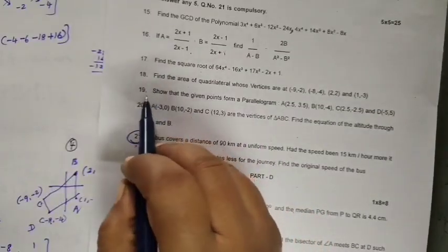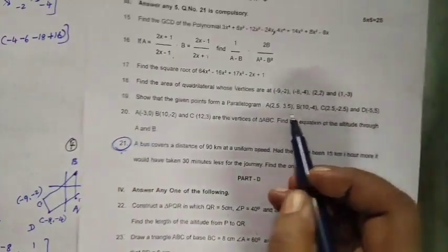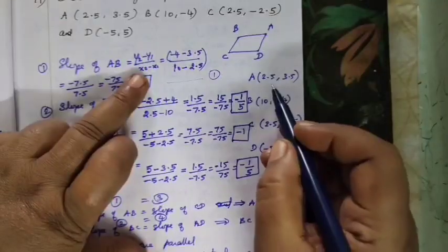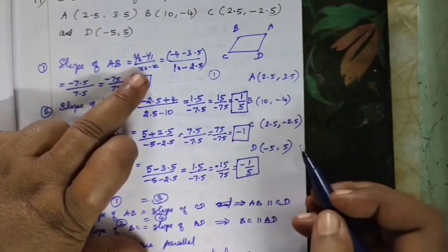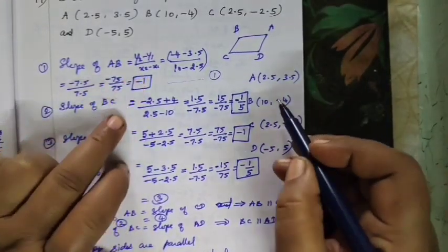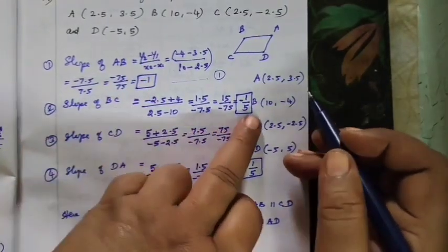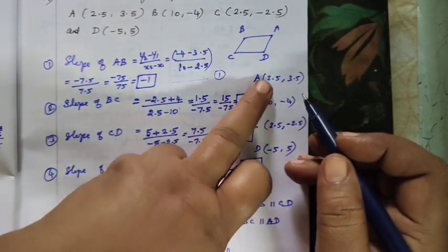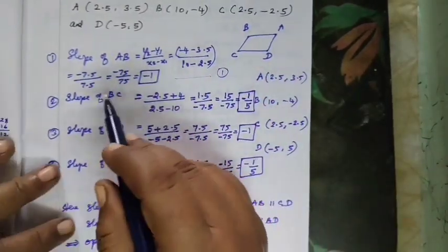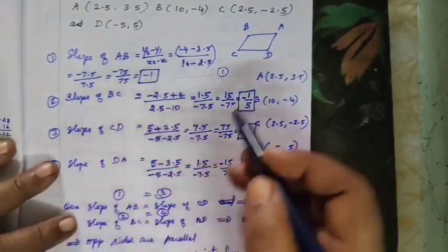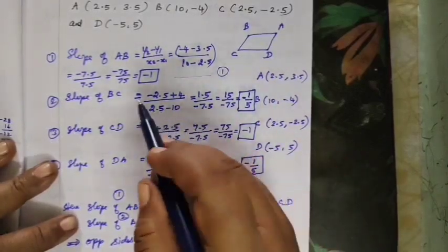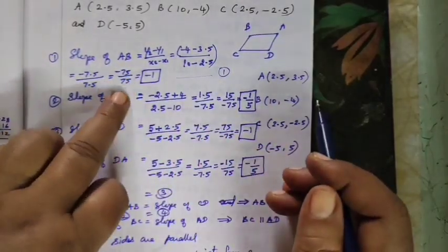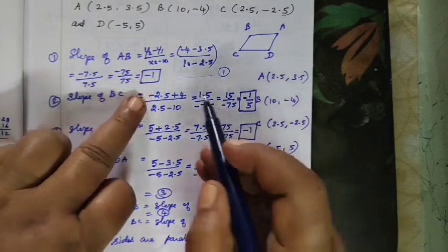Question number 19. Show that the given points form a parallelogram. I will read the number of x1, y1 in the description box. Read x1, y1, x2 minus x1. So if you repeat this, you will be afraid of the answer. The point is 75 by 75 minus the point — so this is the same. The answer is the same.